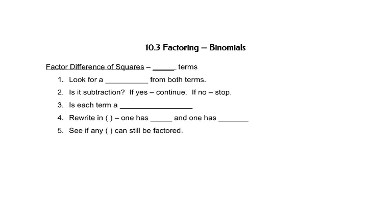In section 10.1, we talked about greatest common factors and how to factor things with four terms. In 10.2, we looked at how to factor trinomials, things with three terms. In this section, we'll look at how to factor binomials, factors with two terms.